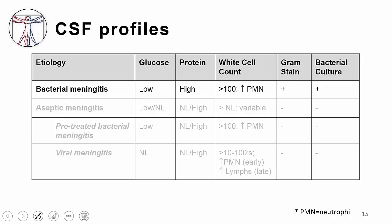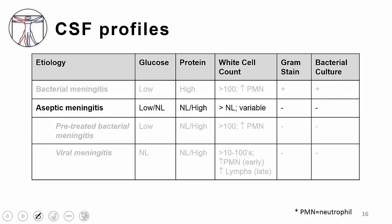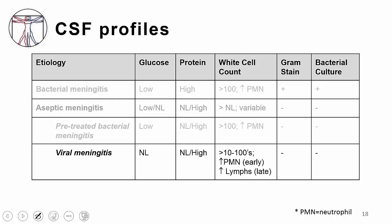Here are some CSF profiles highlighting differences between etiologies. Bacterial meningitis has positive cultures and gram stains, low CSF glucose due to increased utilization by white blood cells and bacteria, high protein, and elevated white blood cell count with a predominance of neutrophils. Aseptic meningitis, caused by many different things, shows variable glucose, variable protein, and elevated white blood cell count — highly variable. Gram stain and bacterial cultures are negative. Pre-treated bacterial meningitis looks similar to bacterial meningitis but cultures are negative. Viral meningitis has normal glucose, normal or slightly elevated protein, and elevated white blood cells with early neutrophil predominance shifting to lymphocytes later.